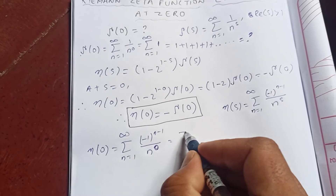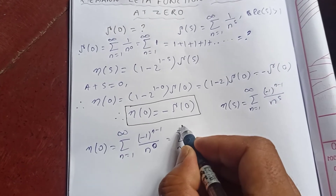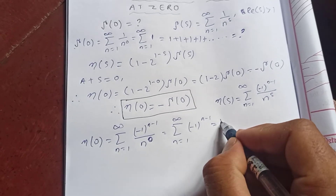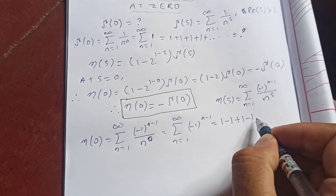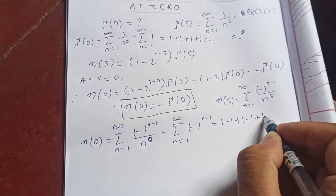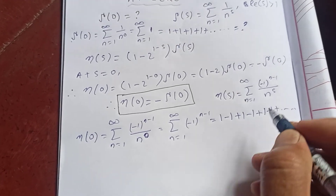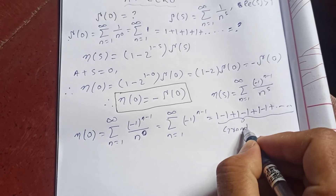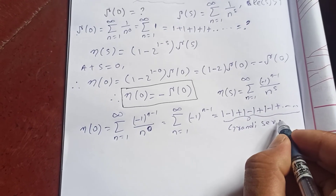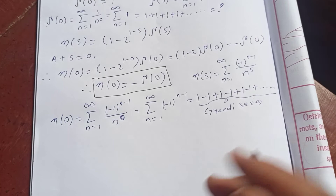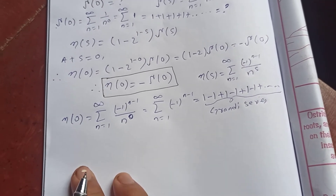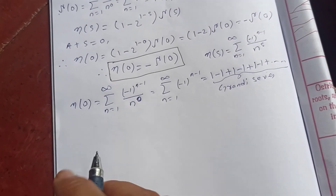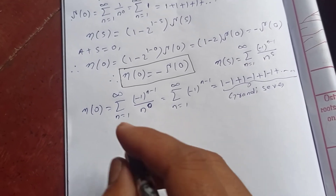At eta of zero, this becomes the sum from n equal to one to infinity of minus one to the n minus one, over n to the zero. Expanding this sum gives one minus one plus one minus one plus one minus one plus and so on. This series is what we call the Grandi series.